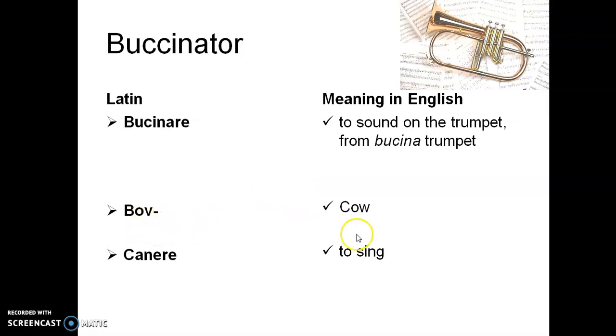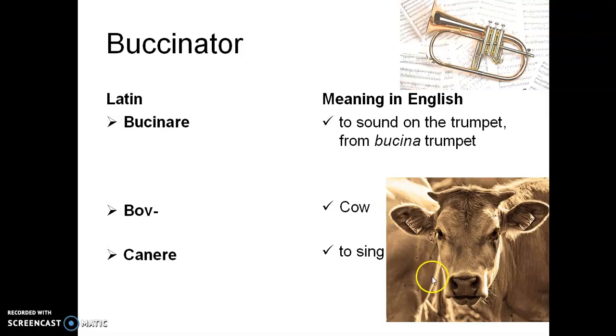It also means bow, which means cow. Caner means to sing. So it is like the singing of a cow. This is another meaning of buccinator where bow, there is one cow, caner means to sing. So how the cow will make a noise - similarly the buccinator is used in the cow.